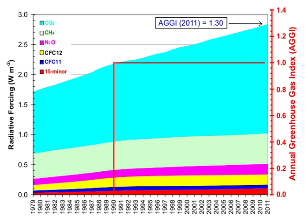Water vapor responds to and amplifies effects of the other greenhouse gases. The Clausius-Clapeyron relation establishes that more water vapor will be present per unit volume at elevated temperatures. Warming associated with increased concentrations of other greenhouse gases will also increase the concentration of water vapor, assuming relative humidity remains approximately constant. Because water vapor is itself a greenhouse gas, this results in further warming — a positive feedback that amplifies the original warming. Eventually other Earth processes offset these positive feedbacks, stabilizing the global temperature at a new equilibrium and preventing a Venus-like runaway greenhouse effect.